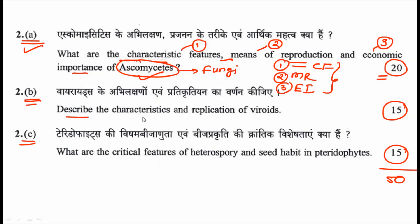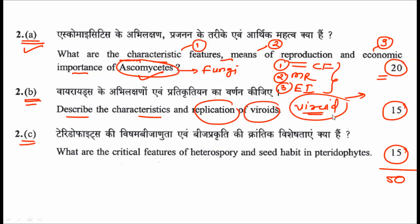The second sub-question asks you to describe the characteristics and replication in viroids. In the first part describe the characteristics of viroids, and in the second part describe their replication mechanism. Covering both aspects will earn you 15 marks.